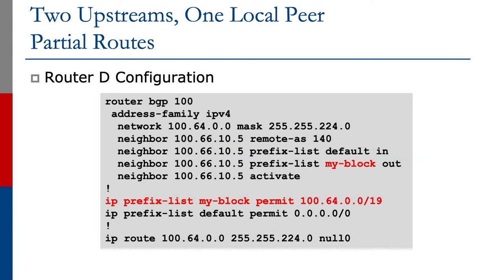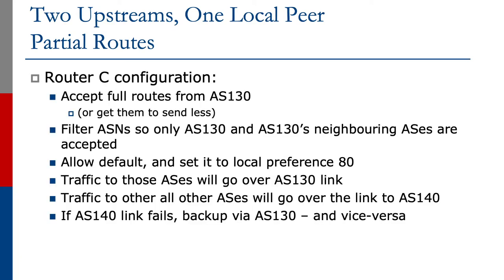The router D configuration is greatly simplified. We now accept the default route in and we send our address block out.